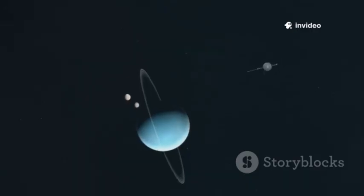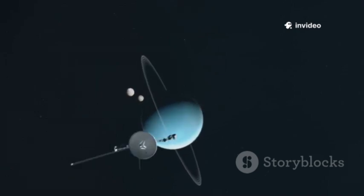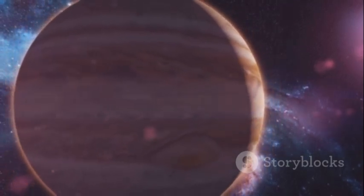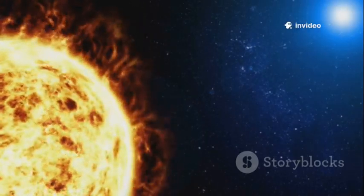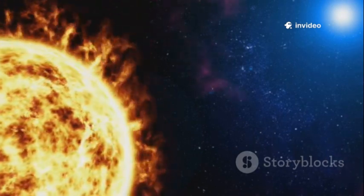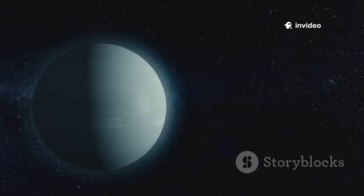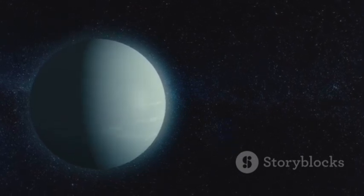Voyager 2's historic 1989 flyby offered us our first close-up look, revealing the great dark spot. This was a colossal storm, a swirling vortex as big as Earth itself. Unlike storms on Earth, Neptune's tempests are primarily powered by an internal heat source rather than direct sunlight. Situated so far from the Sun, the planet receives just a tiny fraction of the solar energy that reaches Earth.